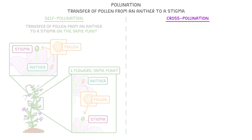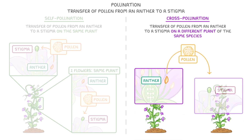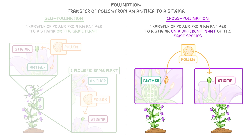Cross-pollination is a little bit different, and it's defined as the transfer of pollen from an anther to a stigma on a different plant of the same species. So in cross-pollination, the pollen would move from the anther of one plant to the stigma of another separate plant. It's really important that both plants are the same species — if they're not, fertilisation won't happen.